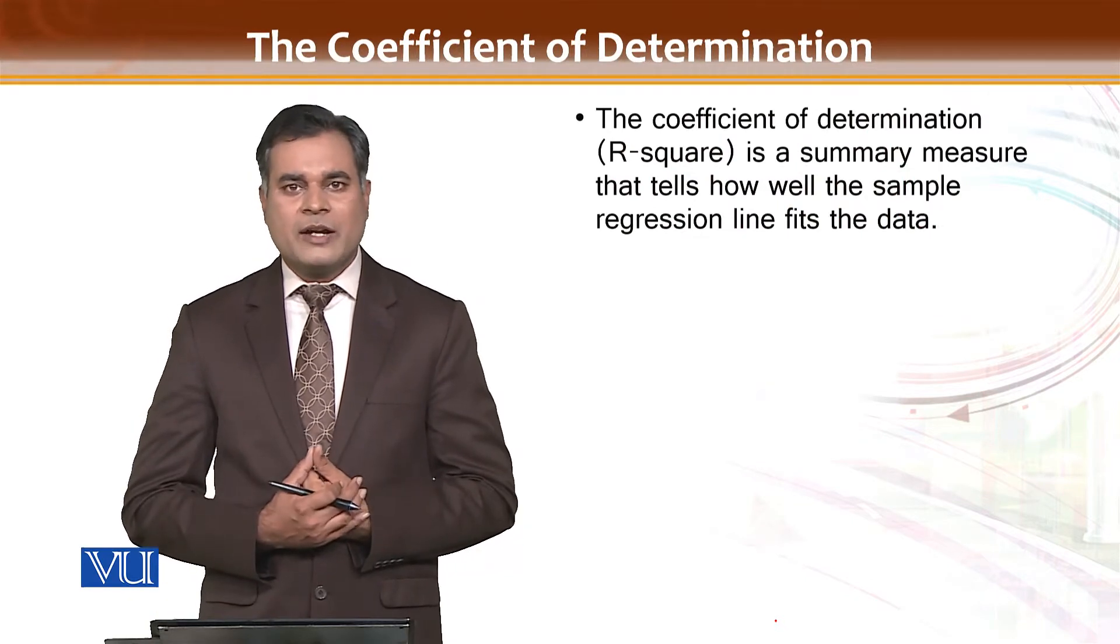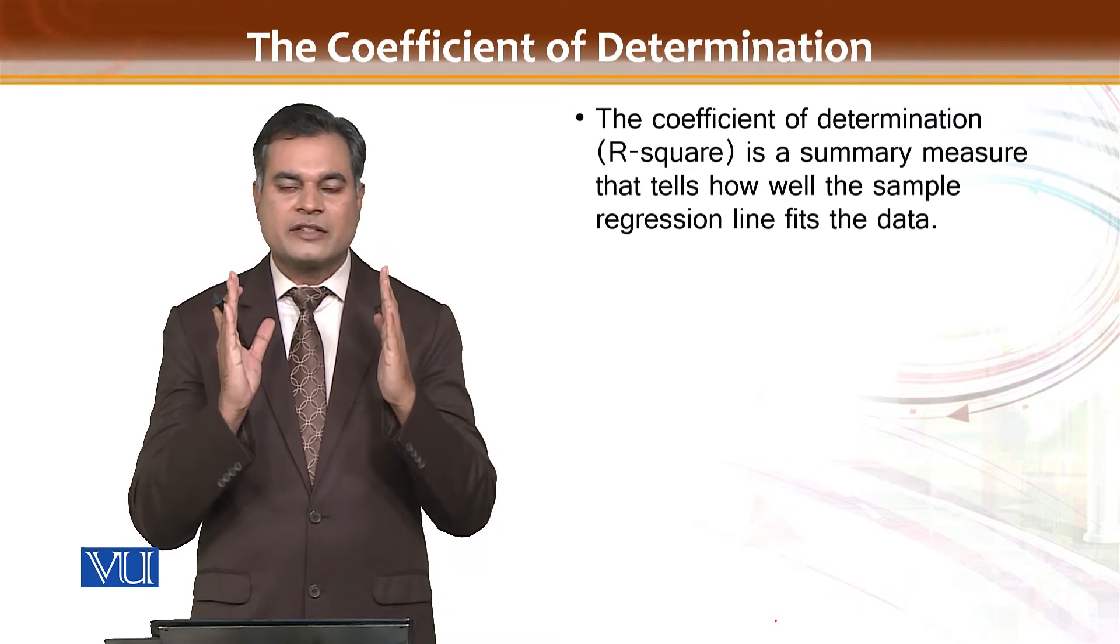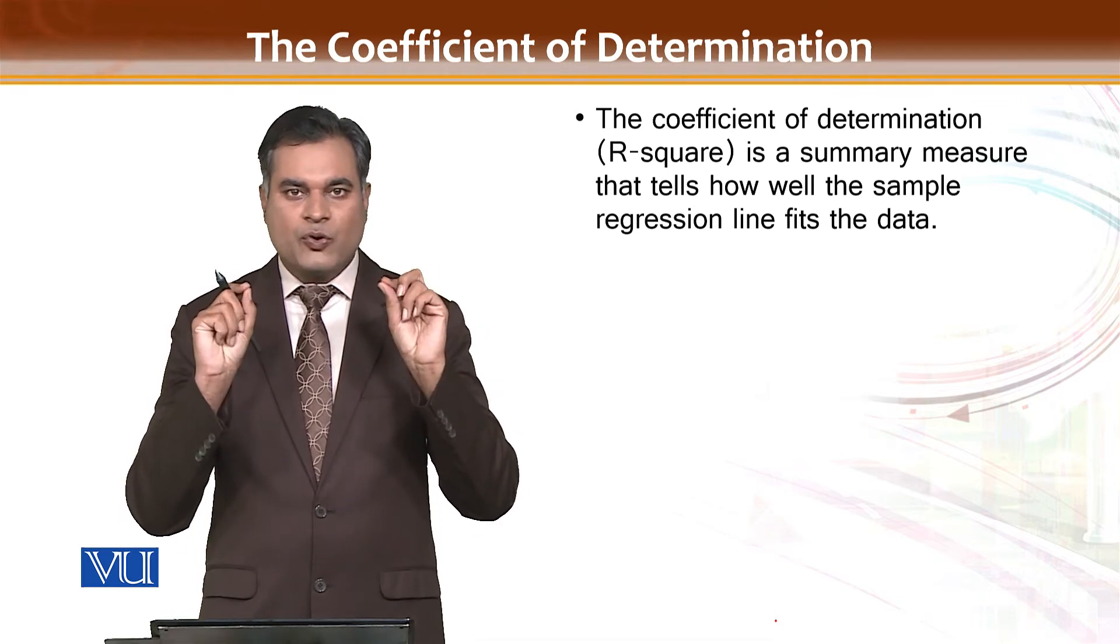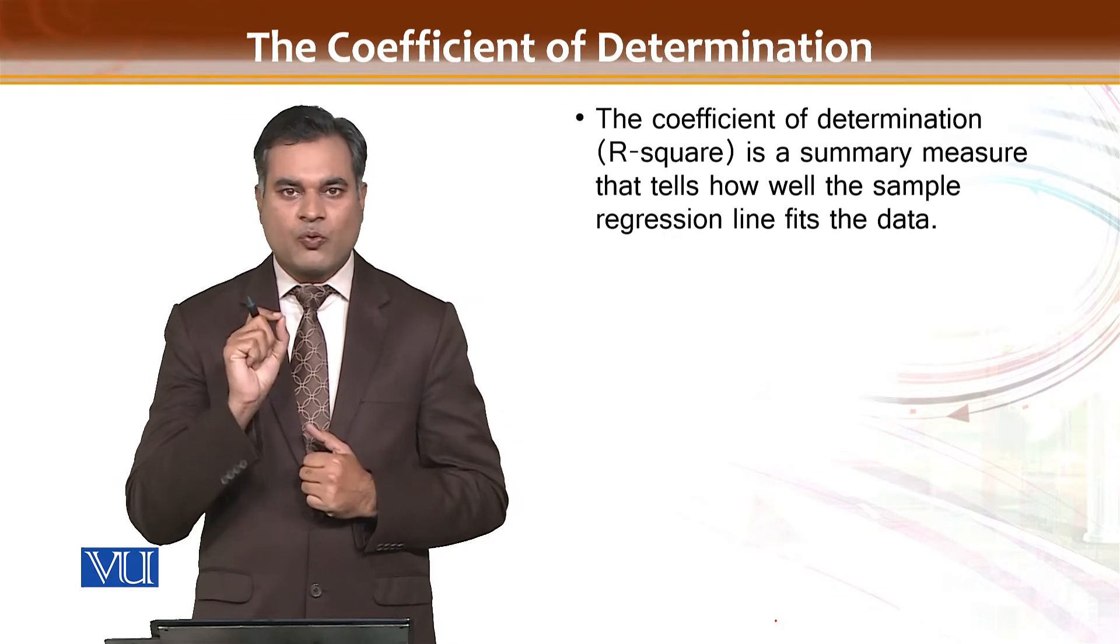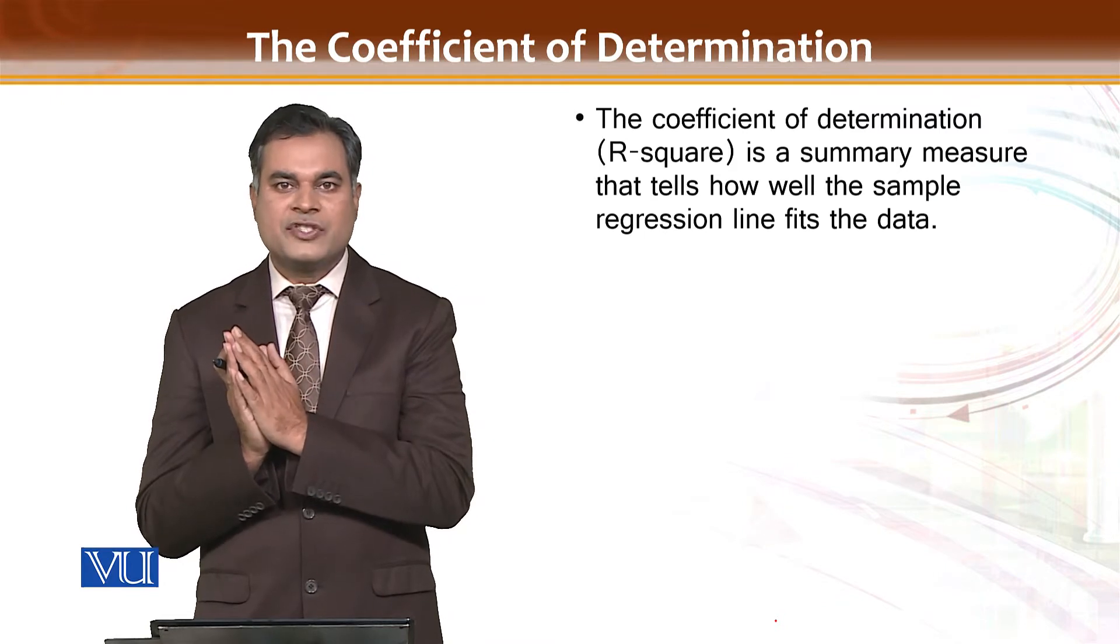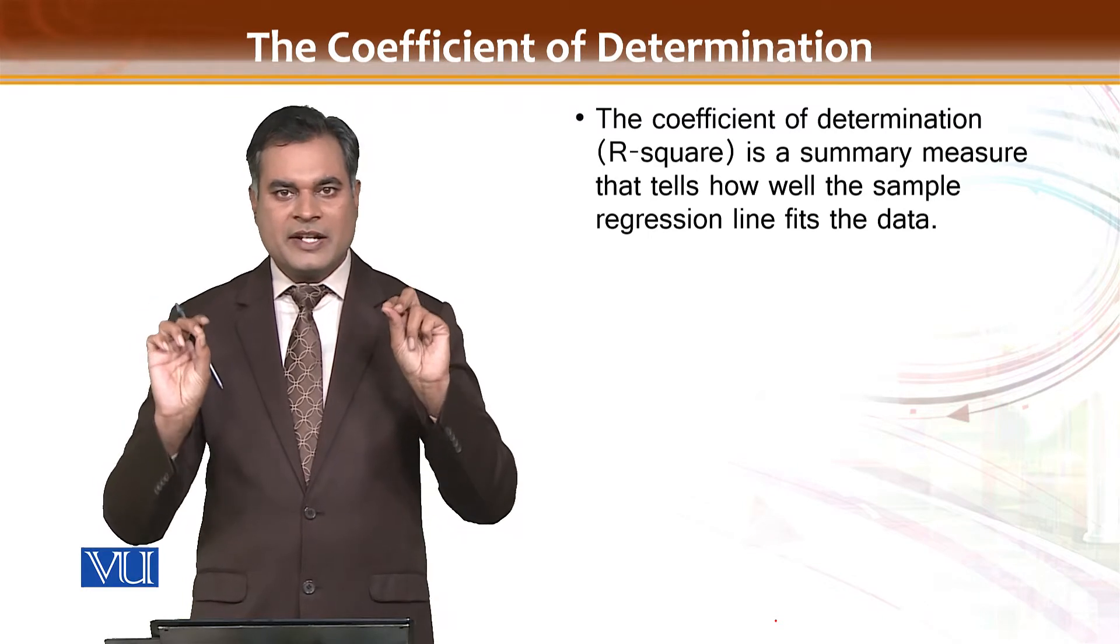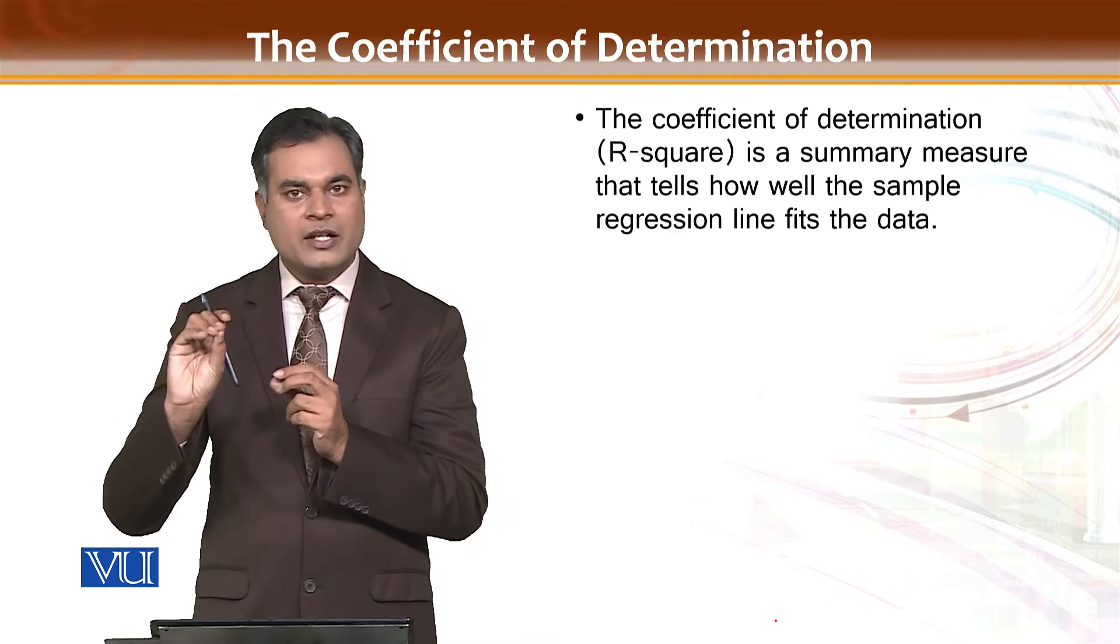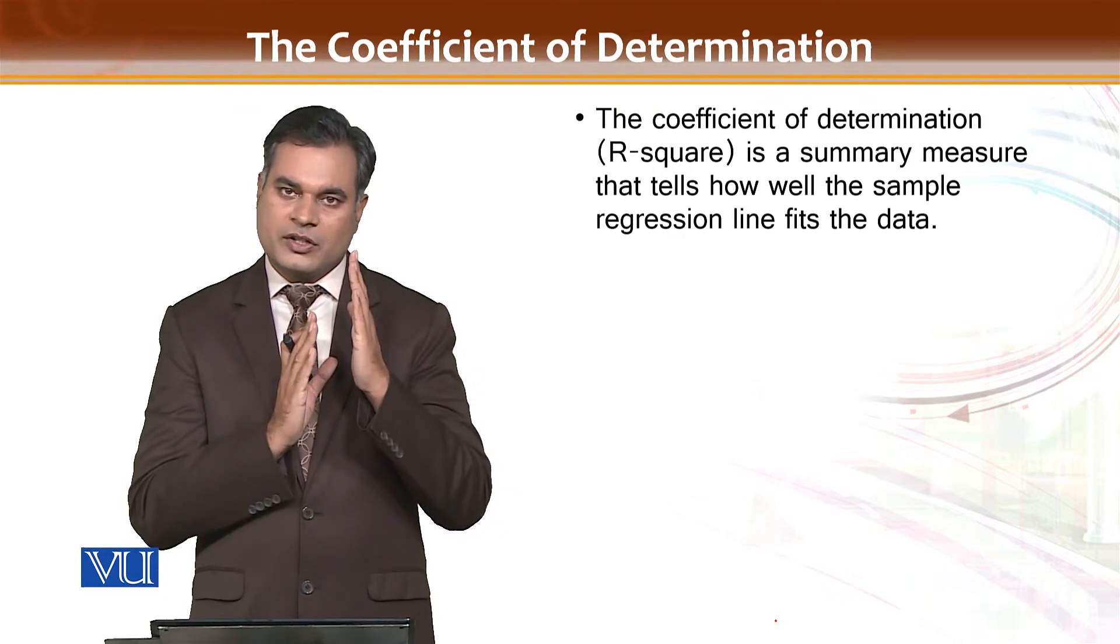R square basically tells the goodness or good fit of the model, how good your model fit is. If you have only two variables, one is independent and second one is dependent, then R square or coefficient of determination shows how much change comes in dependent variable when change comes in independent variable, whether independent and dependent are associated. If there is some movement in independent, will it impact the dependent? If yes, then how much?